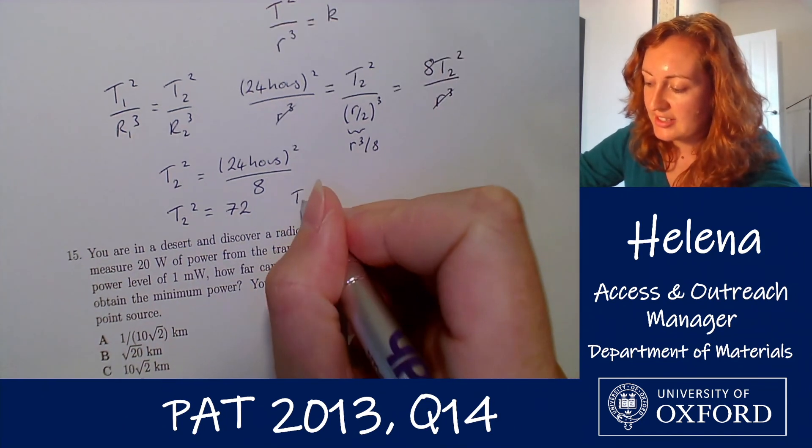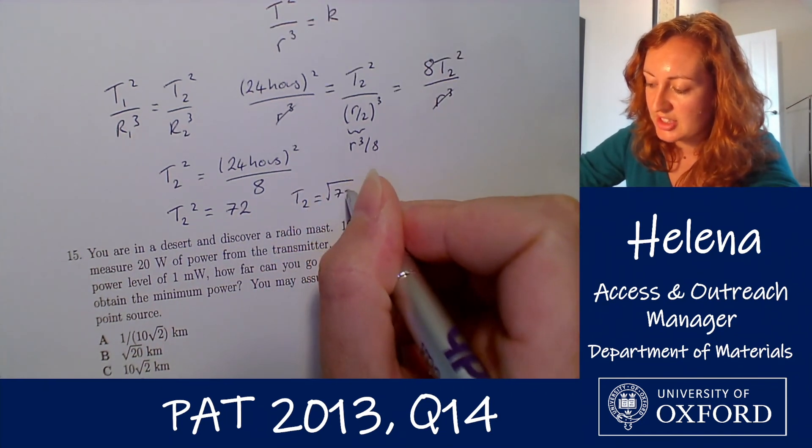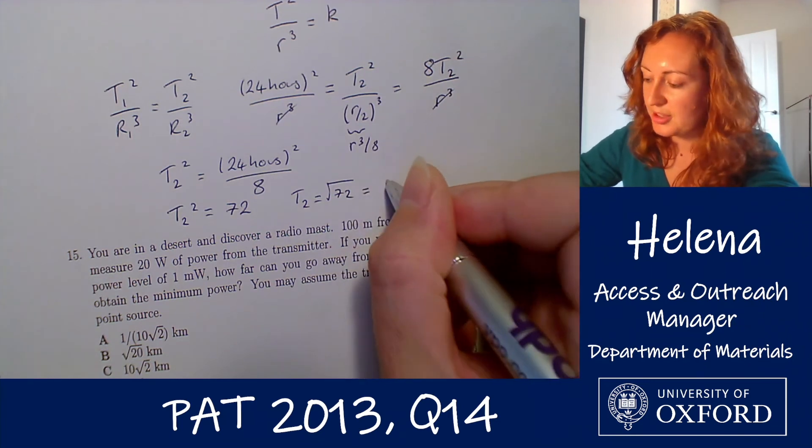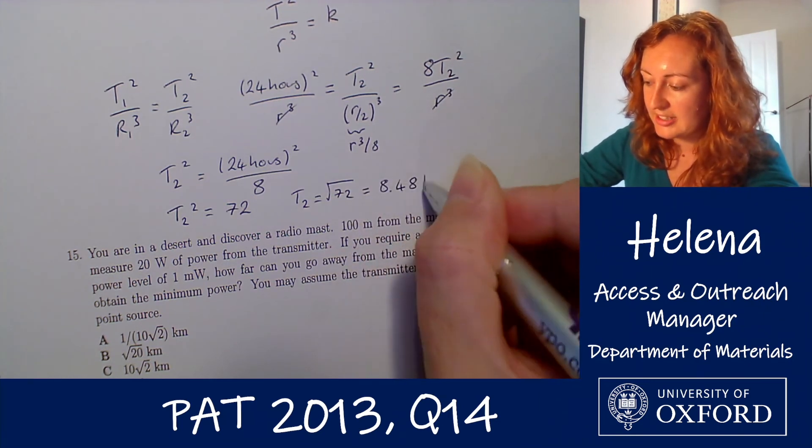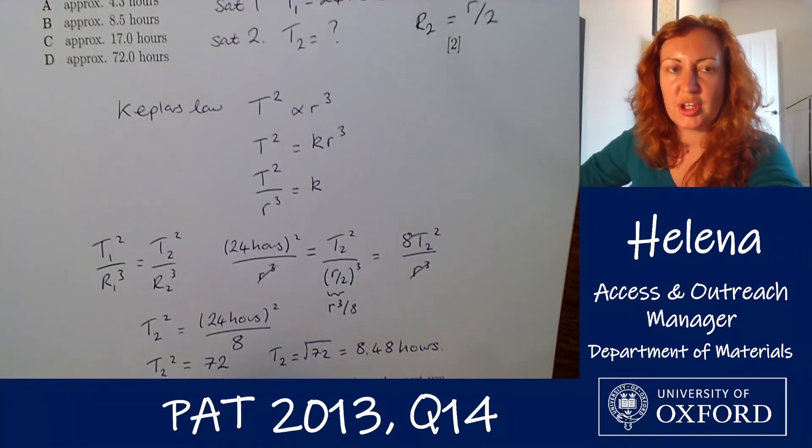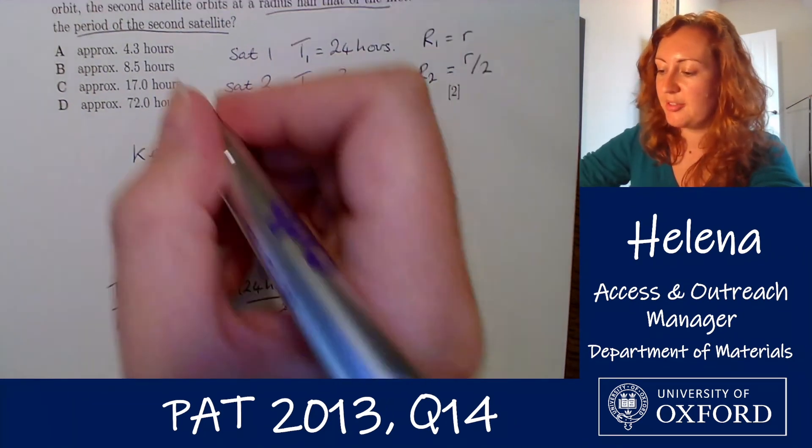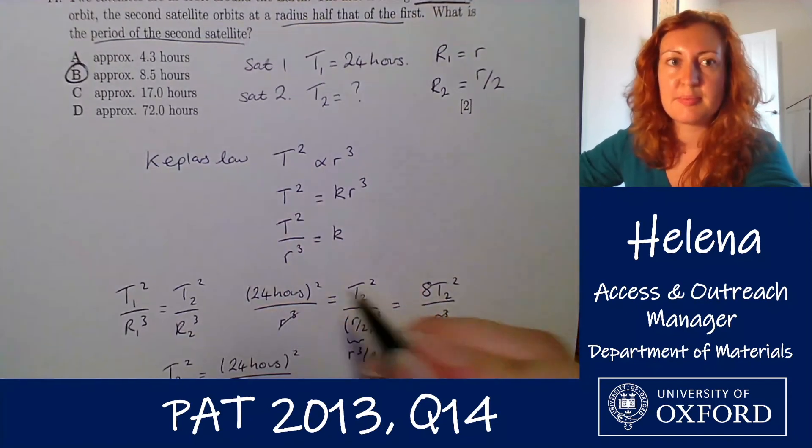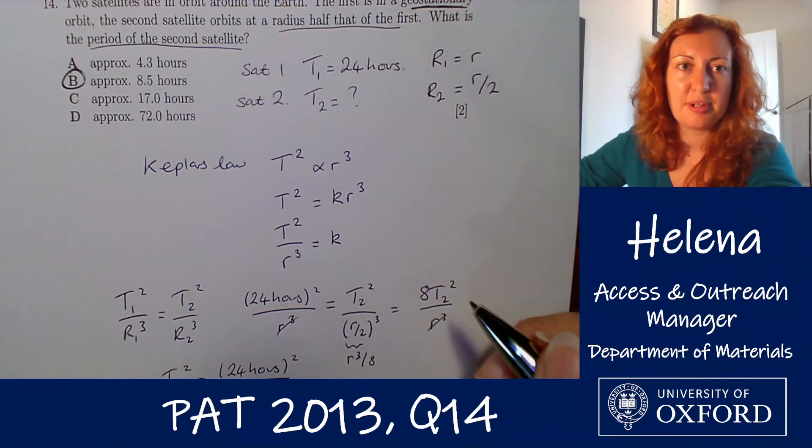So if we take the square root of that t2 is the square root of 72 which is approximately 8.48 hours and matching this up to one of our options we find that the closest answer is b approximately 8.5 hours.